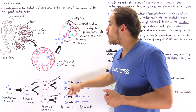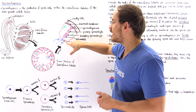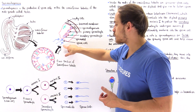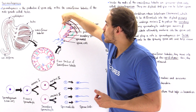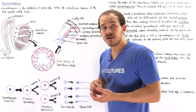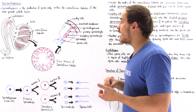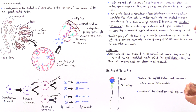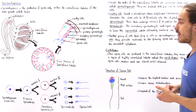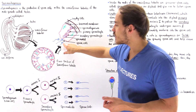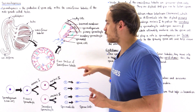These spermatids, with the help of nourishing cells known as Sertoli cells (shown in green), eventually differentiate into sperm cells. The Sertoli cells not only provide proper nutrients, but also phagocytize — removing the cytoplasm from the spermatid to produce the sperm cell. Once the sperm cells are formed, they are released into the lumen, the cavity of the seminiferous tubule.